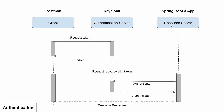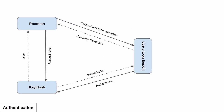Let's represent the same sequence diagram in a different way. This is the representation of the previous diagram but with different naming conventions — instead of 'client' I'm using Postman, instead of 'authentication server' I'm using Keycloak, and the resource server is labeled as a Spring Boot application. The Spring Boot application uses Spring Security for the authentication process.